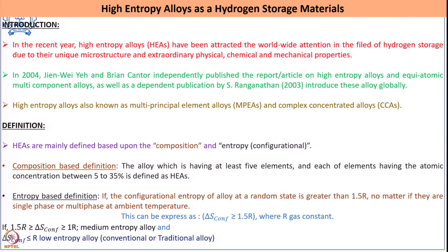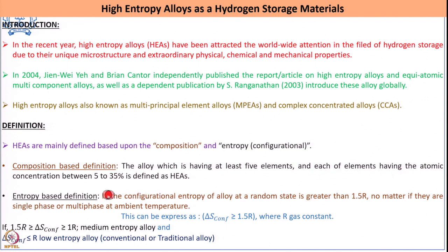There are different exceptions to this class of definition. Broadly, high entropy alloys can be defined based on composition: they should have at least 5 elements such that each element has an atomic concentration lying between 5 to 35 percent — then they are called high entropy alloys.